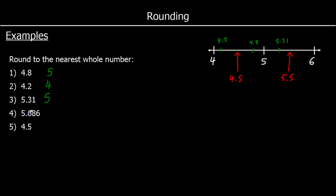And 5.686 — so that's in between 5.6 and 5.7. It's above 5.5, so it's closer to 6 than it is to 5. So it will round to 6.